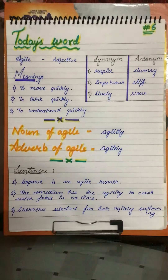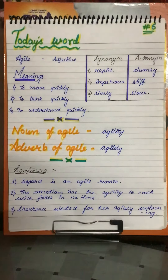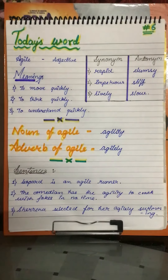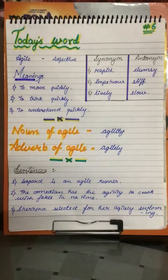Now some related sentences using the words agile, agility, and agilely. First sentence: Leopard is an agile runner. Instead of leopard and runner, you can write: squirrel is an agile climber. It's a very nice sentence.